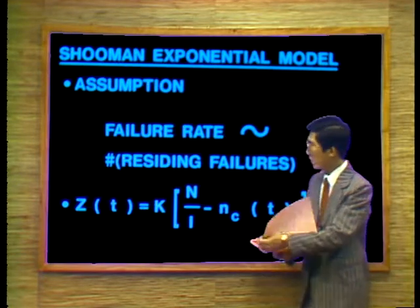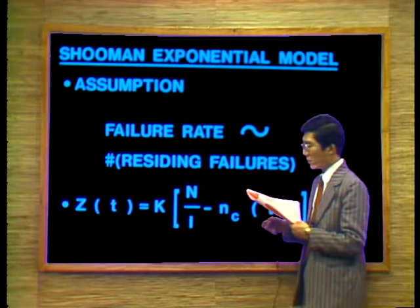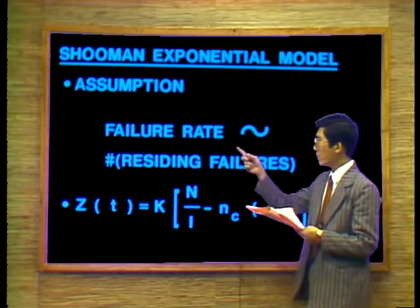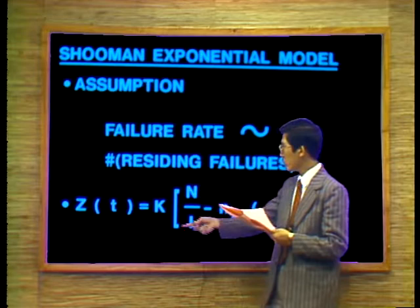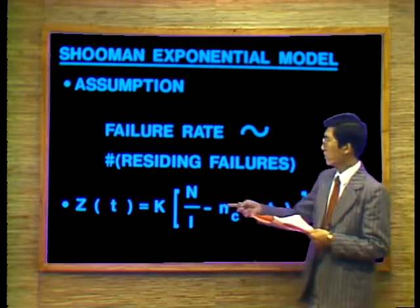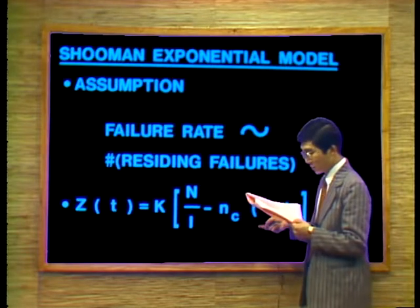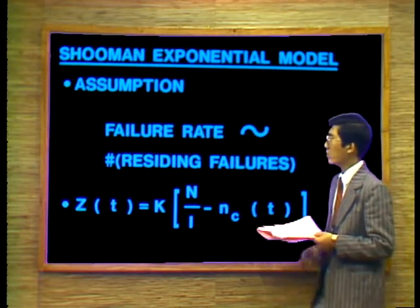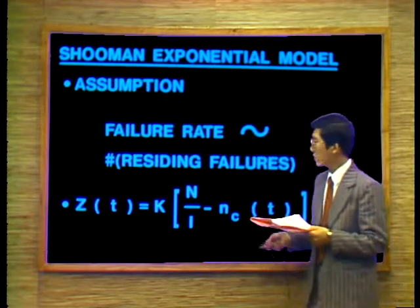Another model is the Schumann exponential model. The assumption here says the failure rate is proportional to the number of failures residing in the software system at any time. The hazard function uses a normalization technique where i is the total number of instructions, N is the number of faults, N sub c is the total number of faults corrected during time t, and K is a proportionality constant.